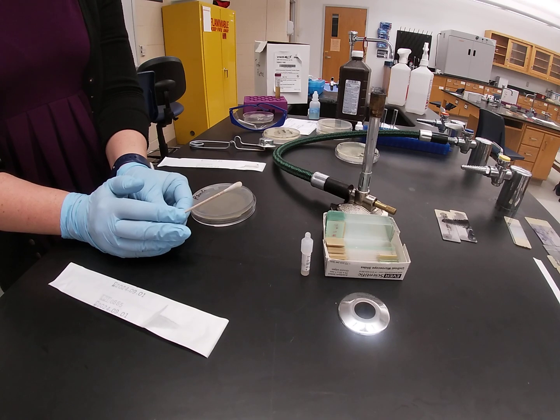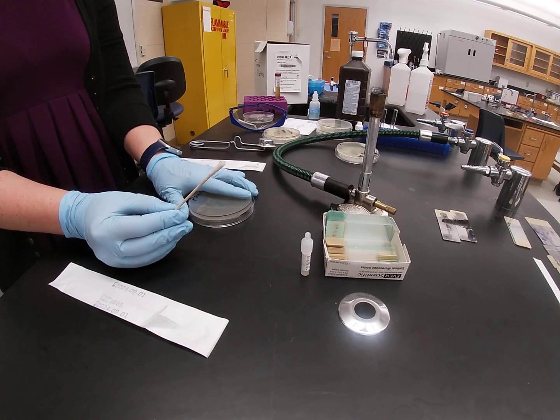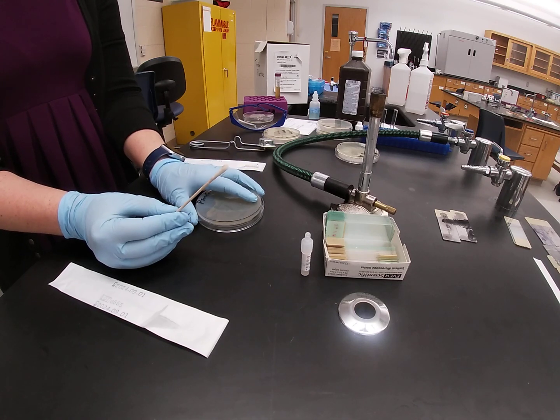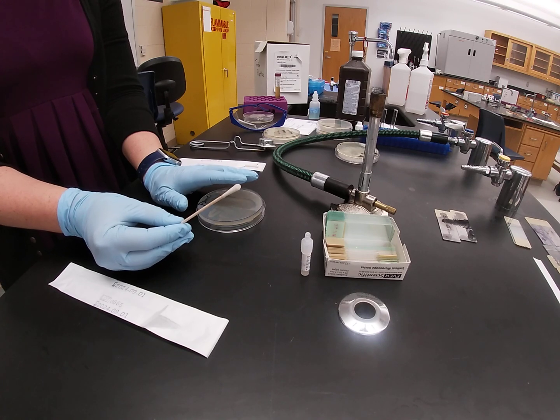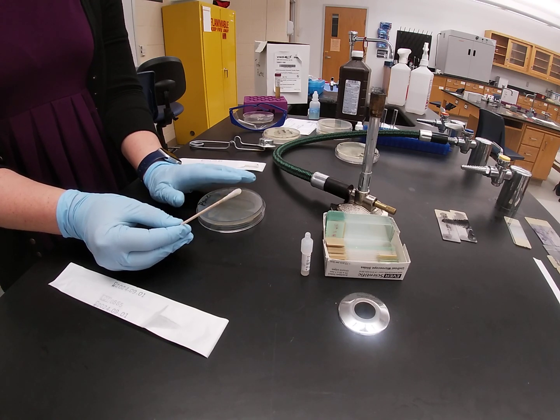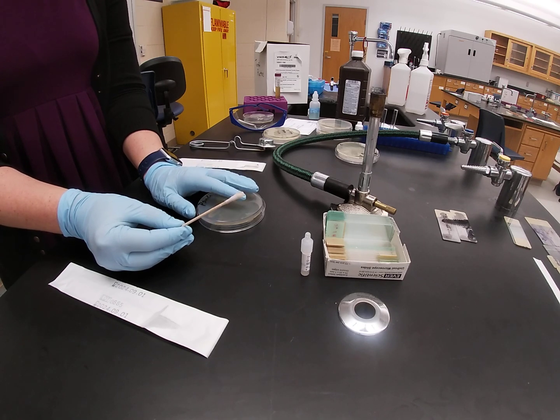Additionally, with the oxidase test you are looking for a color change, so you want to make sure that the bacteria that you pick come from a colorless plate. If you take bacteria from a plate like a McConkey plate or an EMB plate, sometimes the bacteria may already have a color and this can give you a false positive oxidase test.